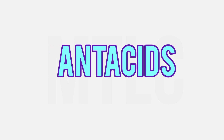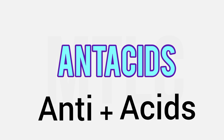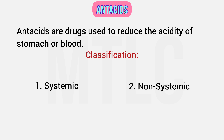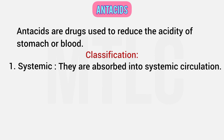Next are antacids — a very important topic. If you have a drug that lowers the acid level or acidity, that's an antacid. Antacid classification is systemic and non-systemic. If an antacid is absorbed into systemic circulation, it is called a systemic antacid.